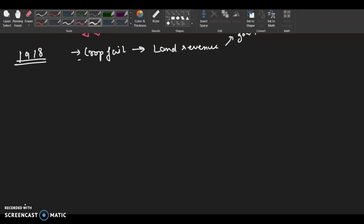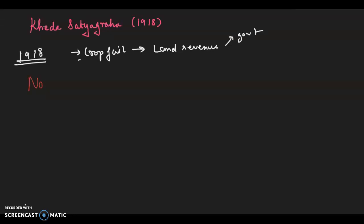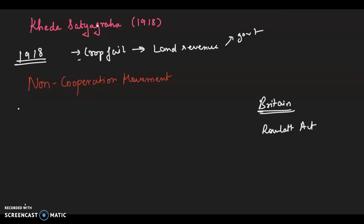Now we will move on to a very important movement — the Non-Cooperation Movement. The Congress had supported the British government during the First World War. India contributed significantly by supplying men and materials, in the hope that self-government would be granted to them by the end of the war. However, Britain passed many acts such as the Rowlatt Act, which aimed at suppressing the Indian national movement. The Congress thus decided to launch the Non-Cooperation Movement.